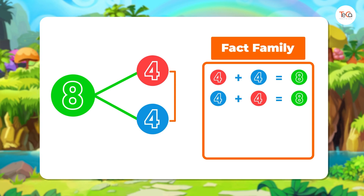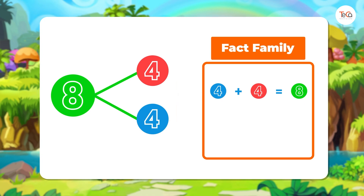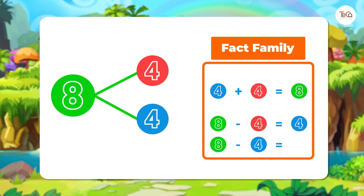Because the two parts are the same, these two addition facts are also the same, so we just write one. 8 minus 4 equals 4. Because the two parts are the same, these subtraction facts are also the same, so we just write one.